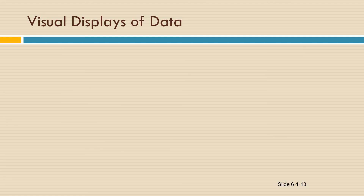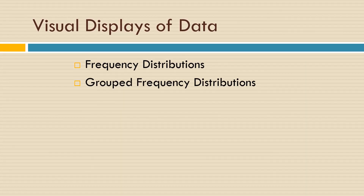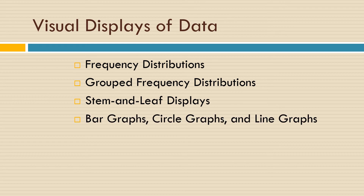One helpful way of organizing and communicating about data is to put it into a visual display. We will look at several kinds: frequency distributions, grouped frequency distributions, stem and leaf displays, bar graphs, circle graphs, and line graphs. We'll look at these in detail in the next couple of videos. I hope you found this video helpful — if you did, please give it a thumbs up, as that helps other students to find the video.